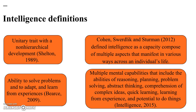An Intelligence article in 2015 defined intelligence as multiple mental capabilities that include the abilities of reasoning, planning, problem solving, abstract thinking, comprehension of complex ideas, quick learning, learning from experience, and potential to do things.